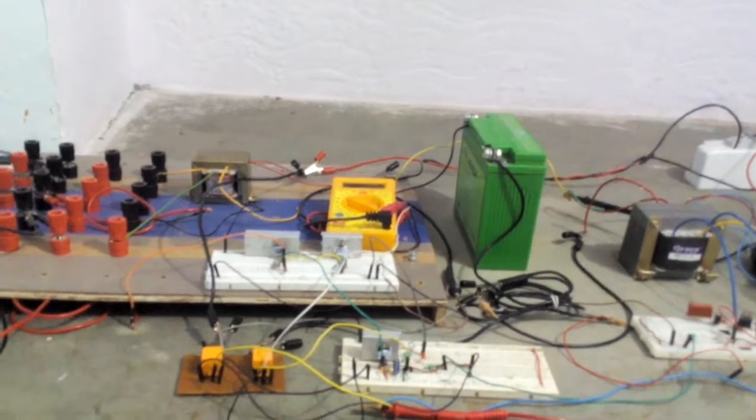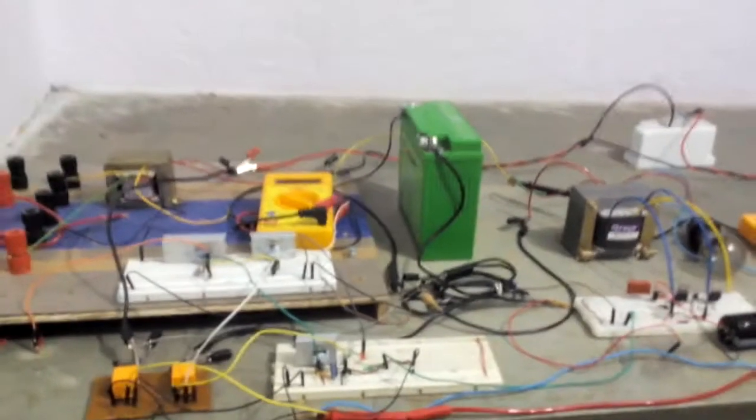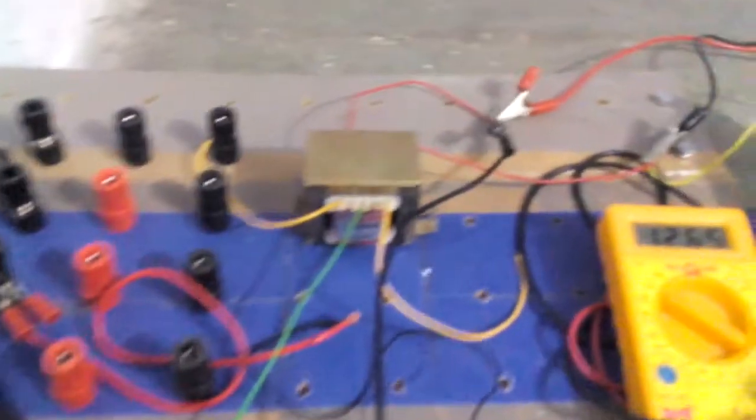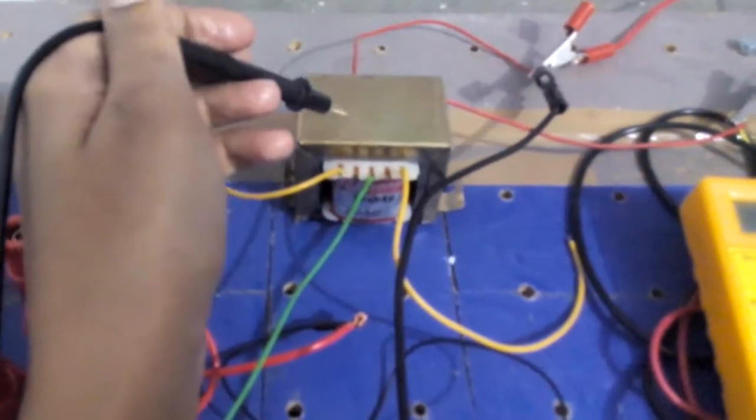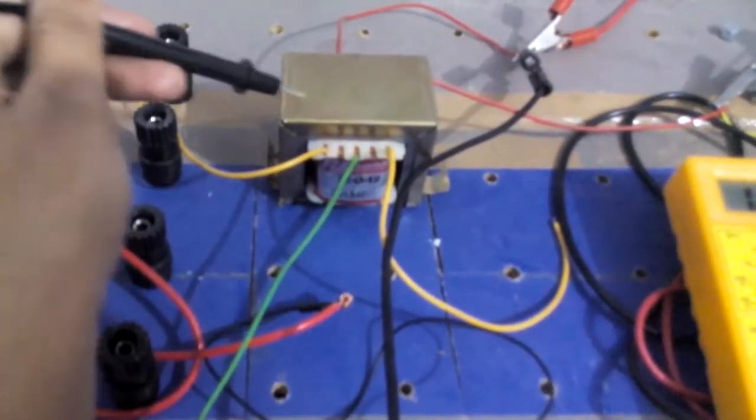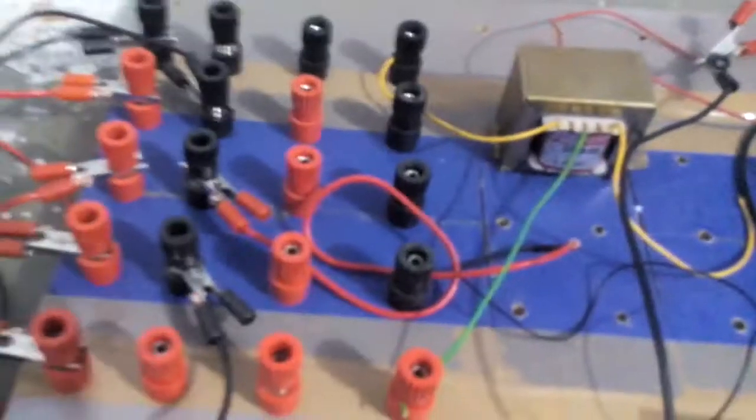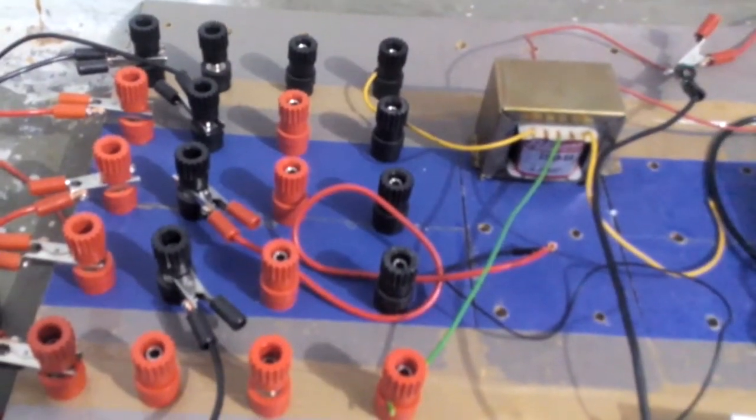This is a demonstration video of an offline UPS with a 12-volt lead acid battery and square wave inverter. Here is our whole setup. We have used this step-down transformer to step down our 220-volt AC to 18 volts. Here we have made this breadboard for high current and high voltage.